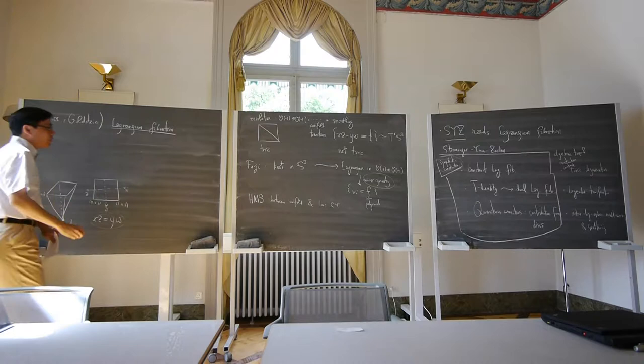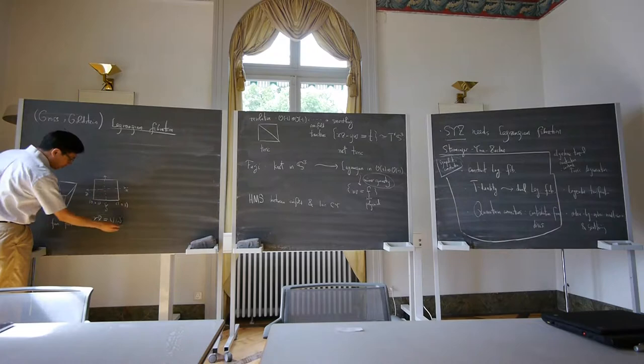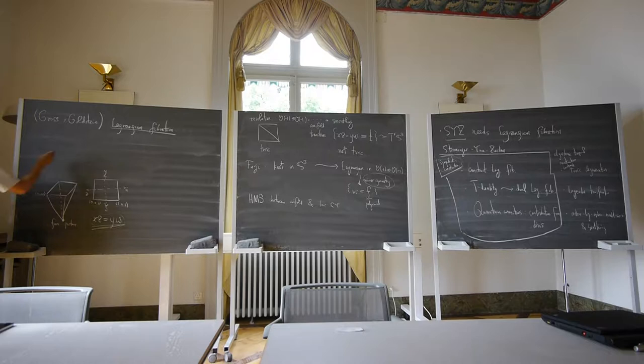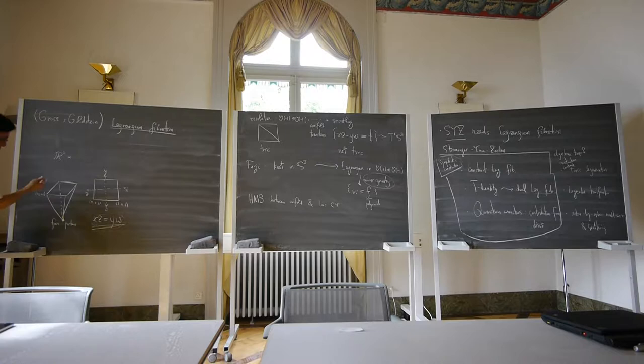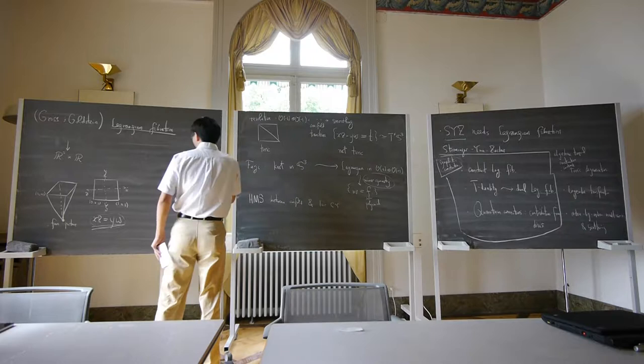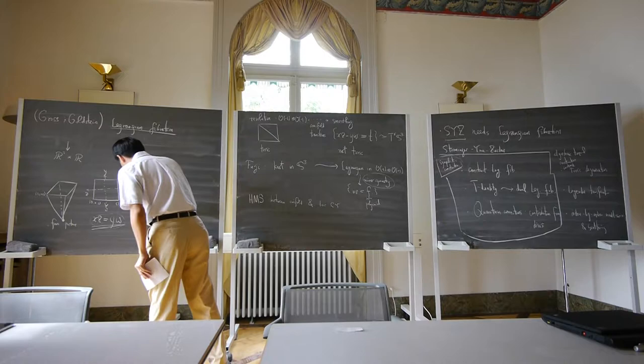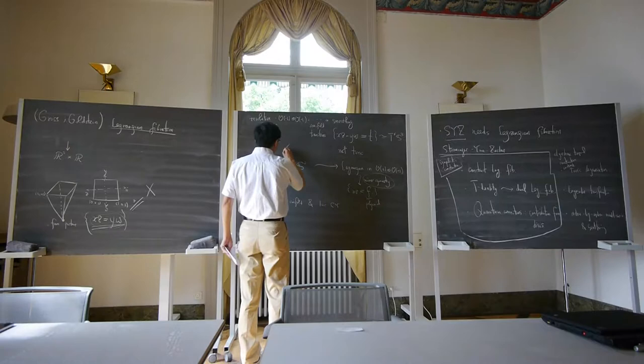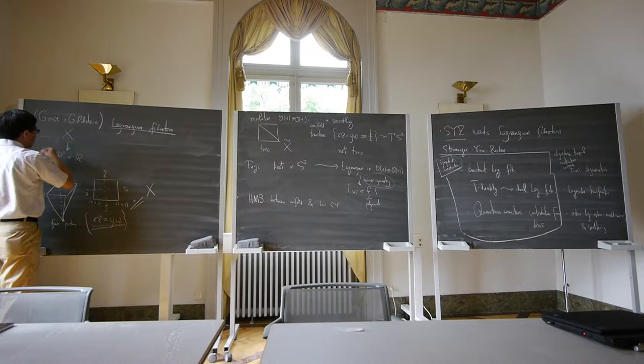Remember we have four coordinates on the conifold: x, y, z, w. We want to construct a projection to ℝ² × ℝ, giving a projection to ℝ³. Let's denote the conifold or its resolution by X̃. We want a Lagrangian fibration for X̃ to this ℝ³. The first two coordinates are given basically by the moment map.